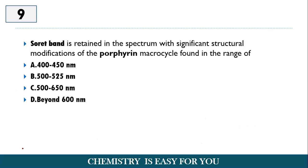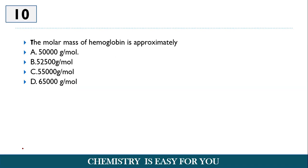Next, Soret band is retained in the spectrum with significant structural modifications of porphyrin macromolecules and it is found in the range. So I will discuss about this term called Soret band in the coming lectures of spectroscopy. So Soret band is retained in the spectrum with structural modifications of the porphyrin macromolecules in a range of certain wavelengths. So what is that wavelength? It is option A, 400 to 450 nanometer.